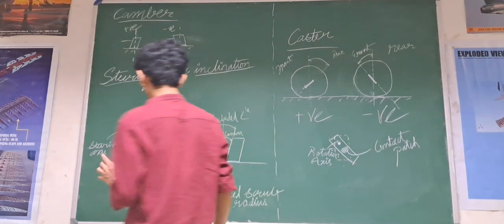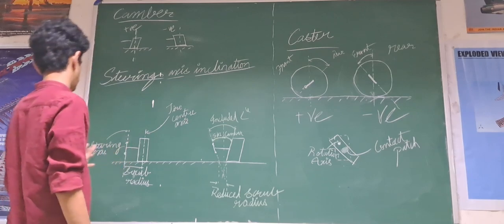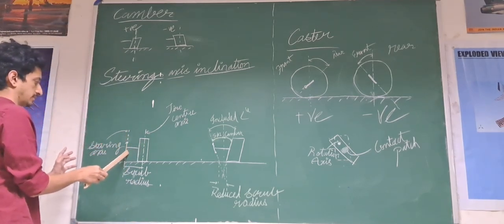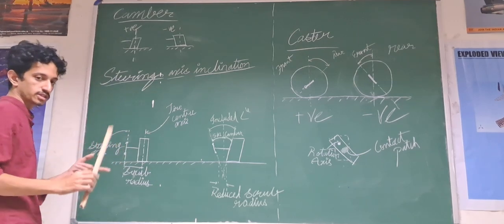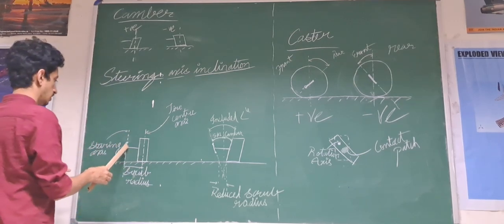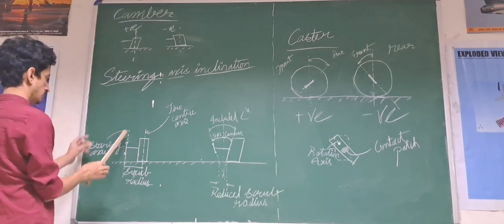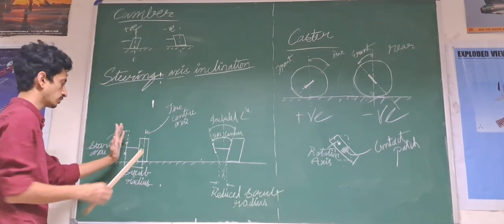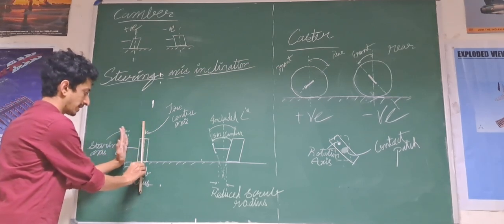By steering axis inclination, we can see that, let us say we have our tire here and our kingpin here. So, kingpin is what holds the controller basically. The kingpin here is, with respect to vertical, let us see it has two parallel lines.